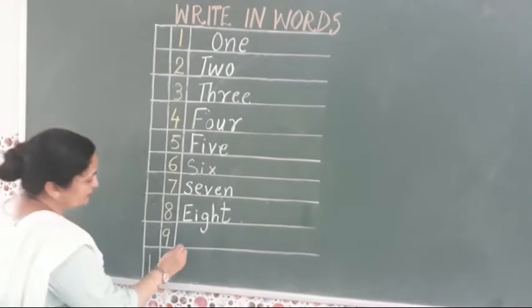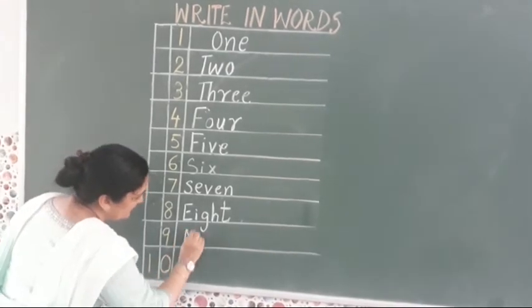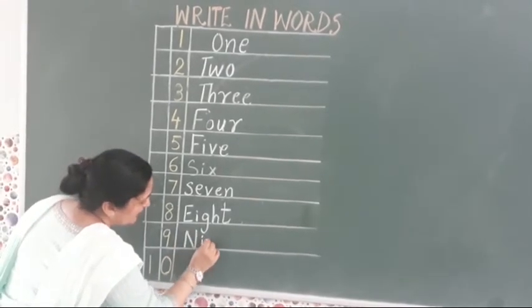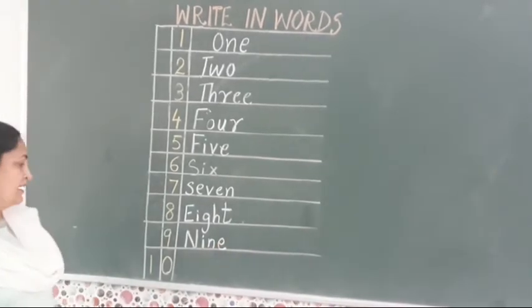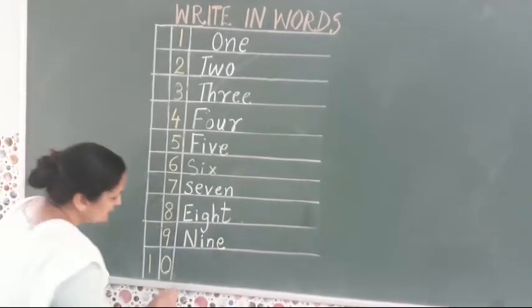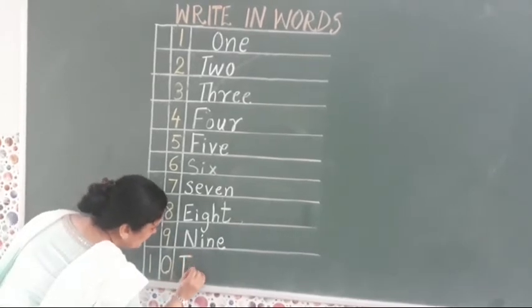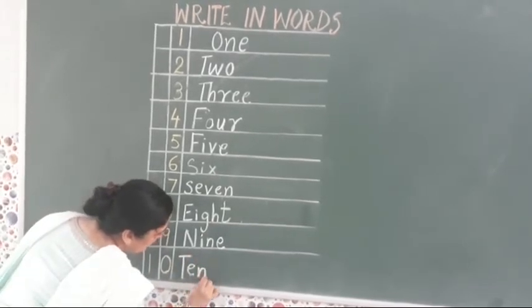Spelling of nine: N-I-N-E, nine. And spelling of ten is T-E-N, ten.